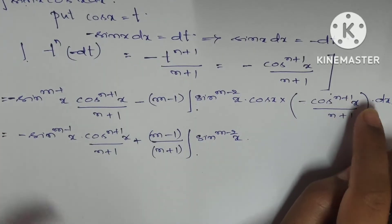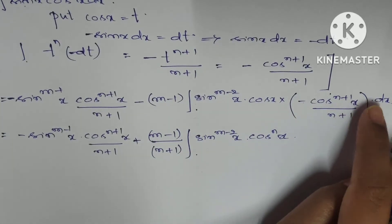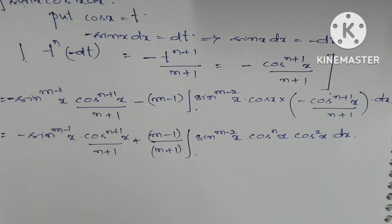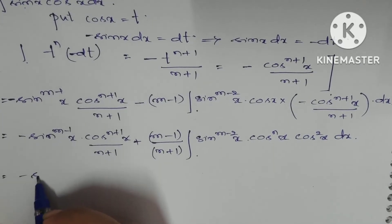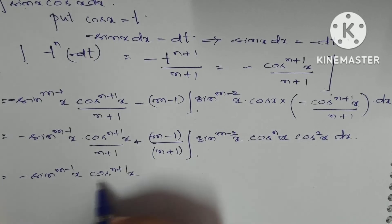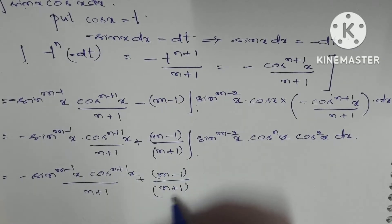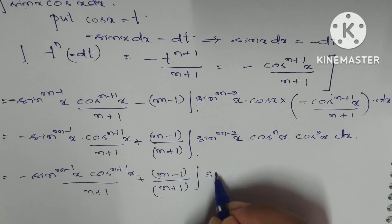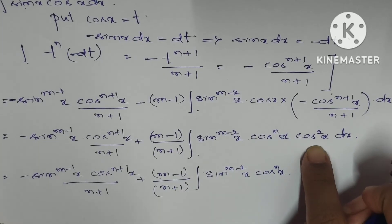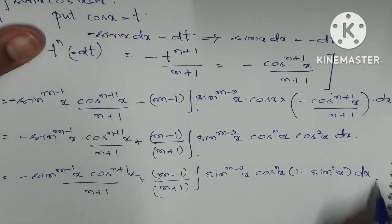Now, breaking cos^(n+1)(x) into cos^n(x) · cos(x), and applying the trigonometric identity cos²(x) = 1 - sin²(x), we can write this as: (m-1)/(n+1) · ∫sin^(m-2)(x) · cos^n(x) · (1 - sin²(x)) dx.